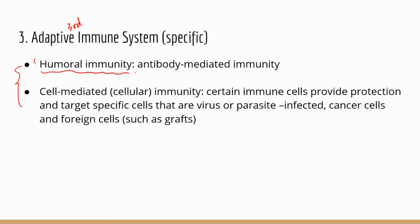The first arm, humoral immunity, is also known as antibody-mediated immunity. That's because this type of immunity involves protection from antibodies. The second arm, cell-mediated immunity, has nothing to do with antibodies.